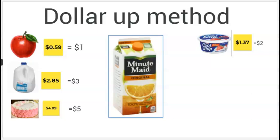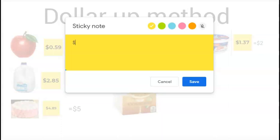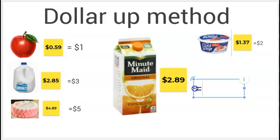I'm in the grocery store and I absolutely love Minute Maid Orange Juice — it's my favorite. I grab it and I notice that the price tag says it's $2.89. How much do I need to give the cashier if the orange juice costs $2.89? Let's cover everything after the decimal. My whole dollar is two. What is one more than two? One, two, three. In order to buy the orange juice, I need to give the cashier $3.